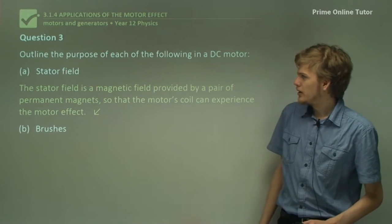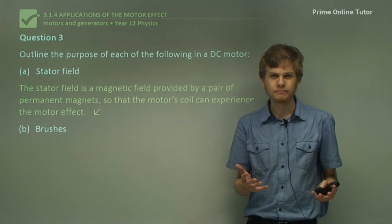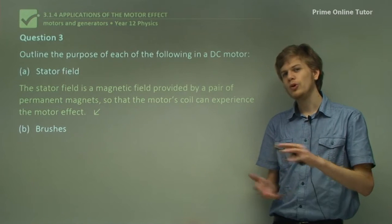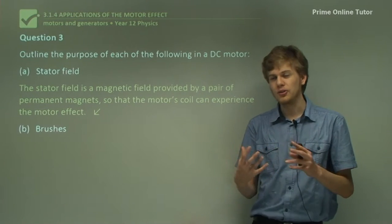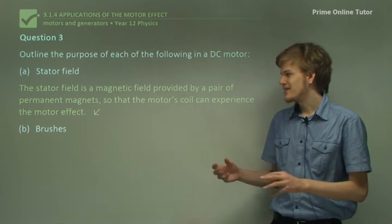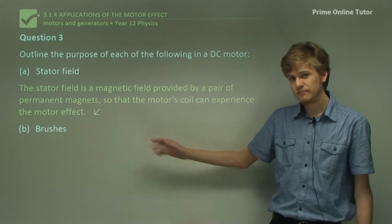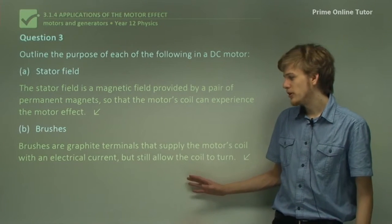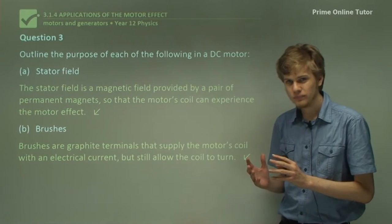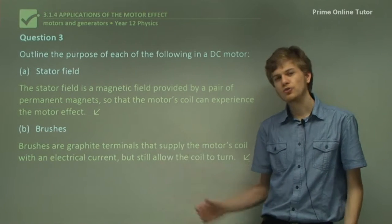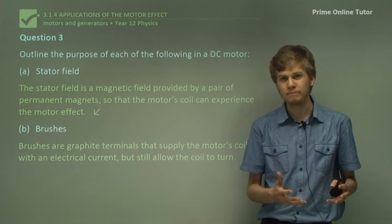Part B: outline the purpose of brushes. When a motor rotates, we don't want wires to get tangled up, so we need a way to supply electricity to the armature without actually being fastened to the armature — and for that we use brushes. Brushes are graphite terminals that supply the motor's coil with an electric current but still allow the coil to turn. We use graphite because it's slippery, meaning the armature will be able to keep turning for a long time without replacing the brushes.